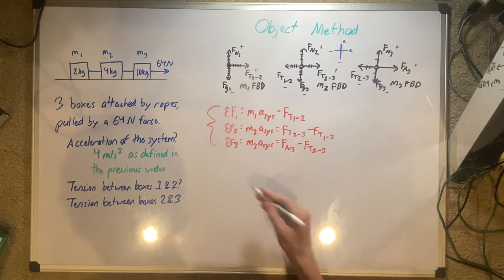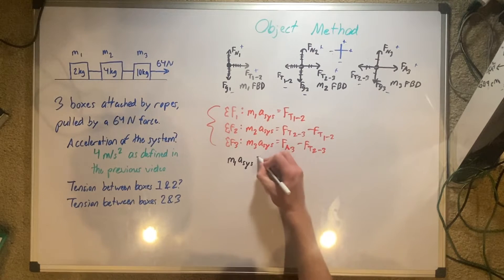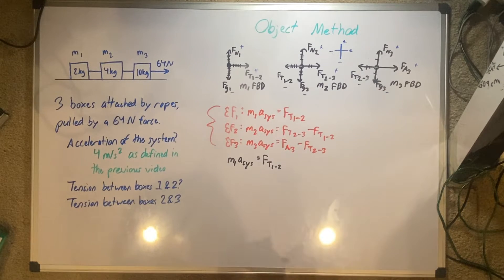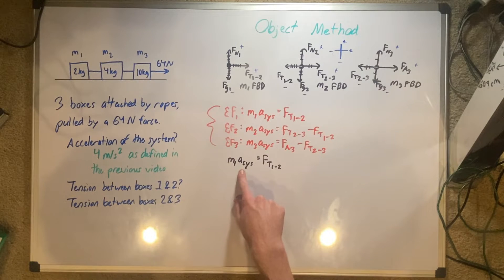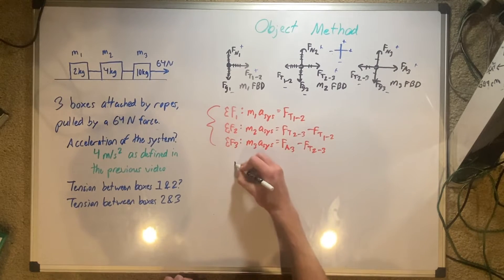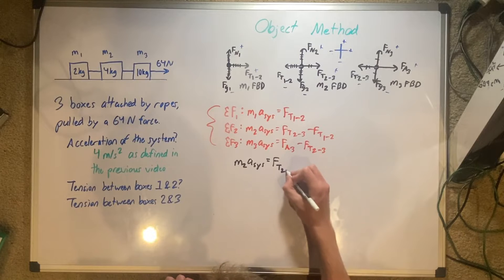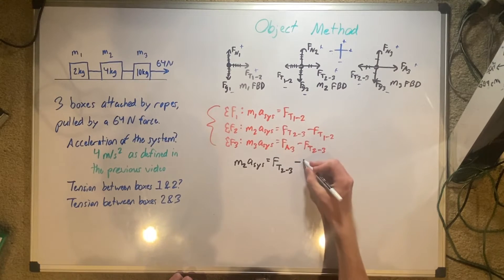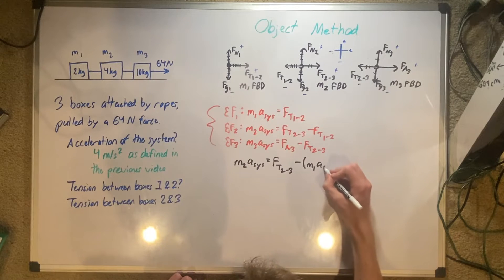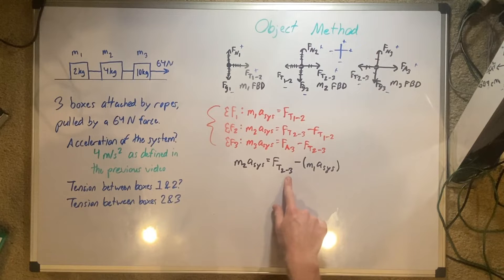We know that M1 times the acceleration of the system is equal to Ft1 to 2. That means that in this equation, we can substitute this into this. We have M2, acceleration of the system, is equal to Ft2 to 3, minus this thing, M1, acceleration of the system. Now, what we can do is solve for this T2, 3.